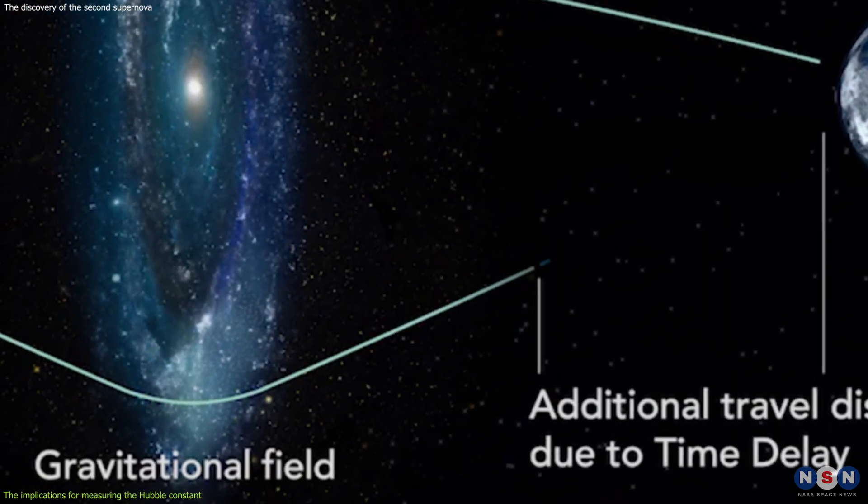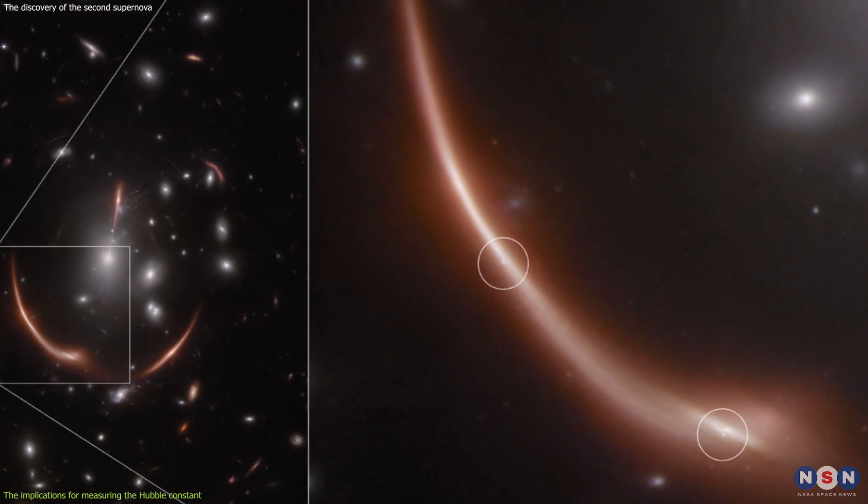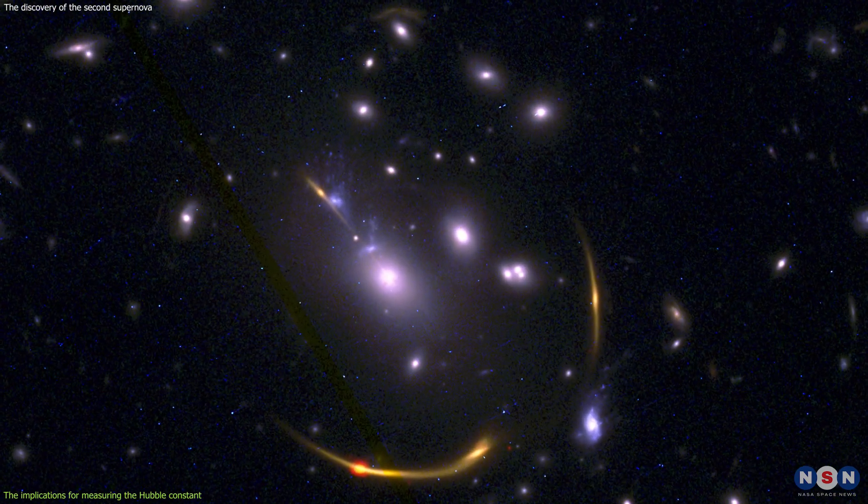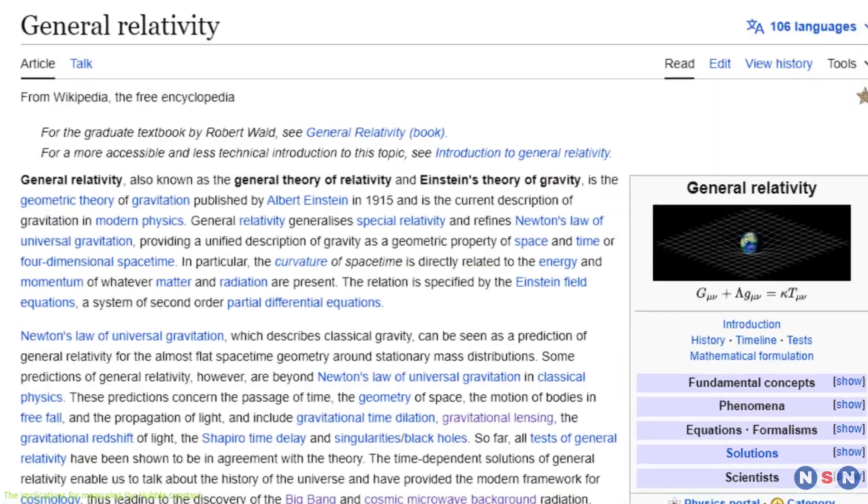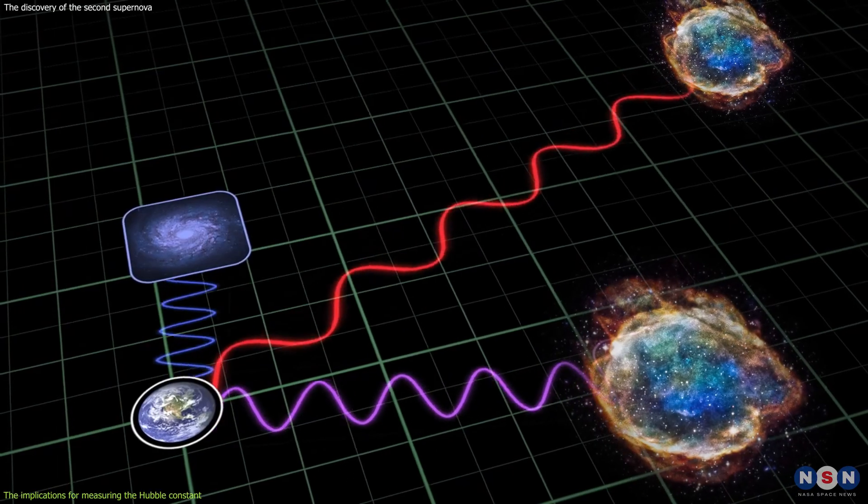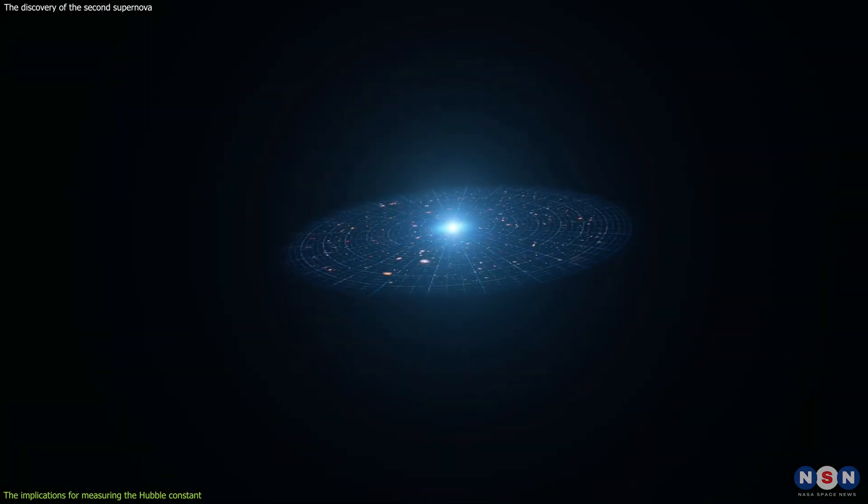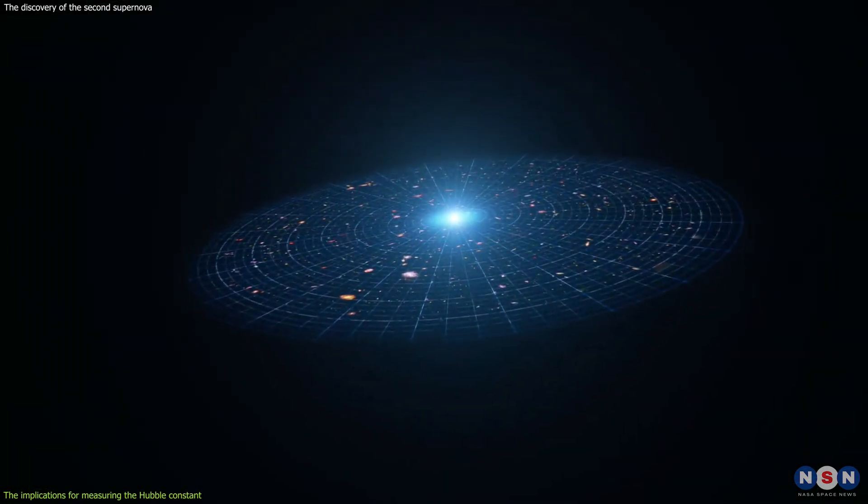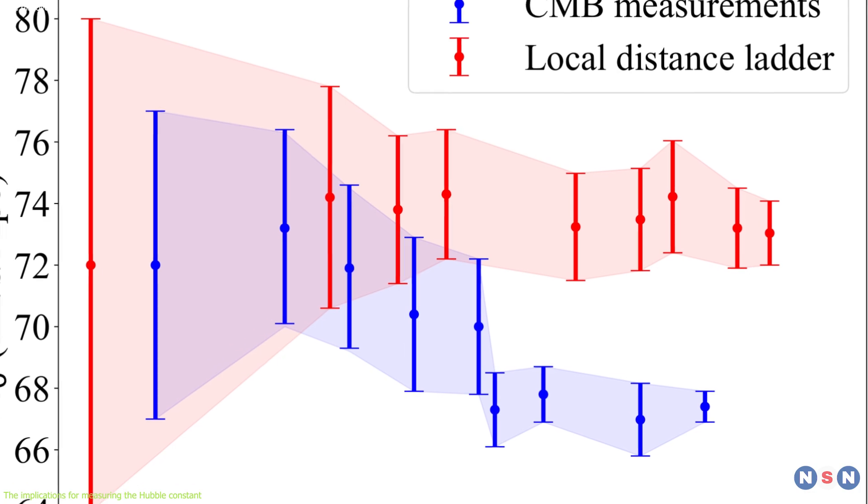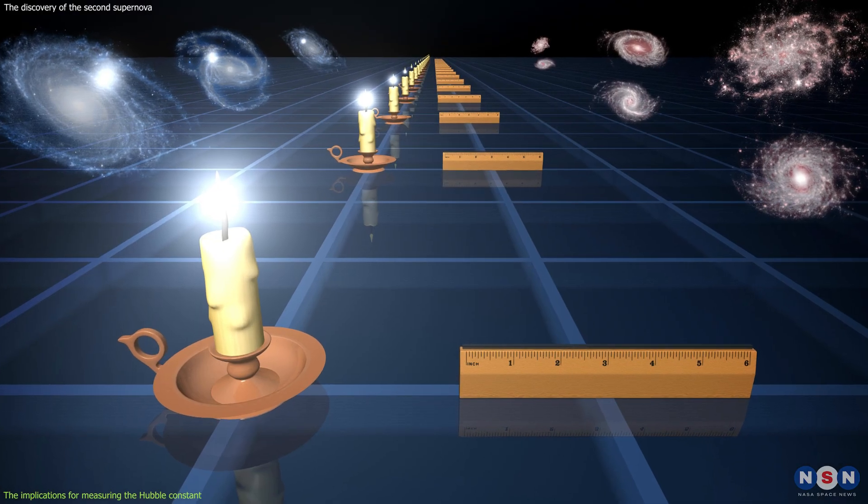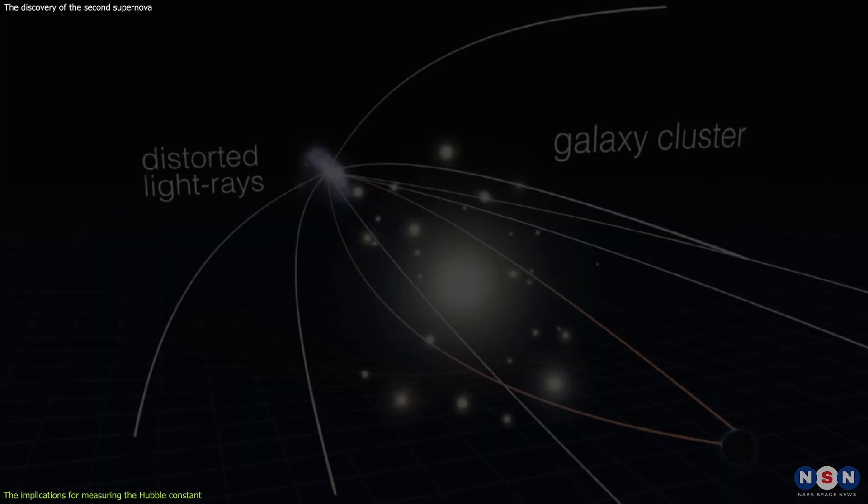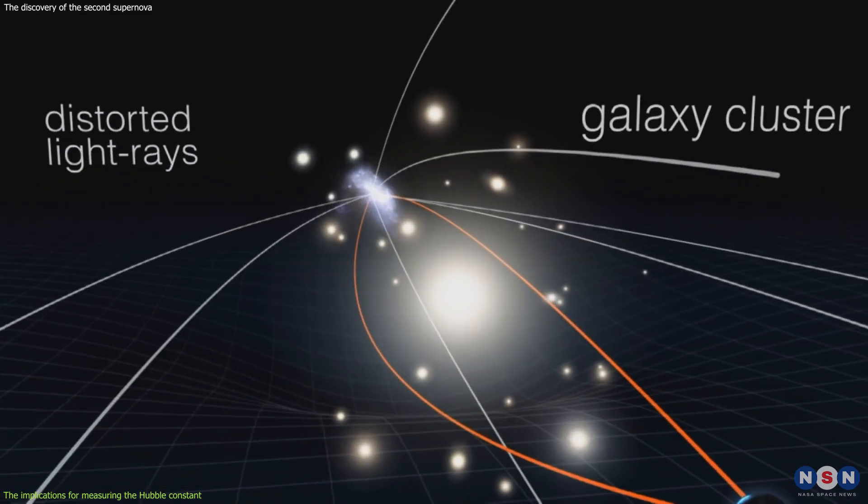Then, by measuring the time delay between the supernovae in different images, we can calculate the distance to the lensing cluster, using the theory of general relativity. Finally, by measuring the redshift of the supernovae and the cluster, we can estimate the expansion rate of the universe, and hence the Hubble constant. This method is independent of the cosmic distance ladder, and it only relies on the physics of gravity and light.